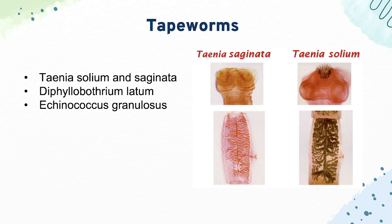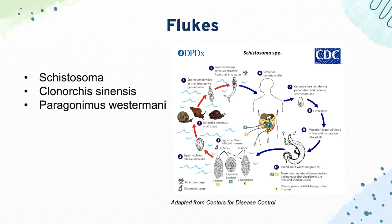Then we have Echinococcus granulosus, which causes hydatid cysts in the liver. Cyst rupture can cause anaphylaxis, so you inject the cysts with alcohol to prevent that. For our flukes, the first is Schistosoma. Know the types — mansoni, japonicum, and haematobium — and how they look based on their spines. Snails are the intermediate host, and they penetrate skin in contaminated water.